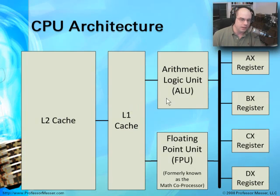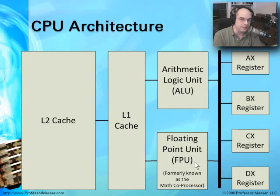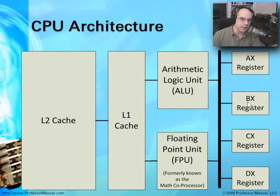The ALU performs functions and calculations, and the FPU works along with it. If you're accustomed to older systems back in the 286 and 386 days, you may recall something called a math coprocessor — a separate processor that you would purchase and install onto your motherboard. These days, the ability to do floating point calculations is already integrated into the CPU itself. You don't have to purchase a separate math coprocessor any longer. On the far right part of the screen are registers.